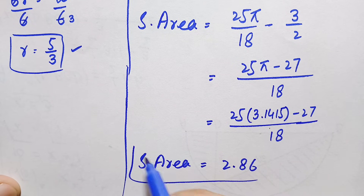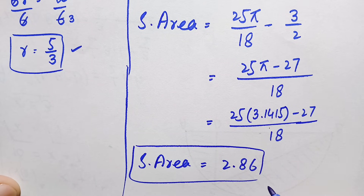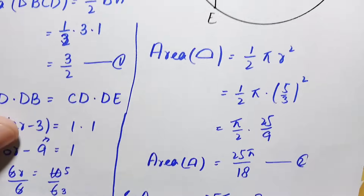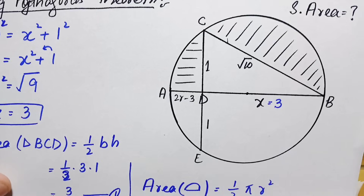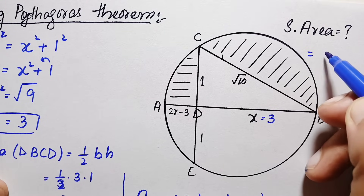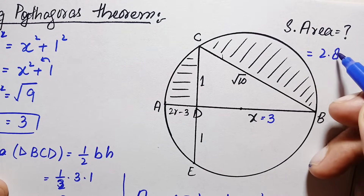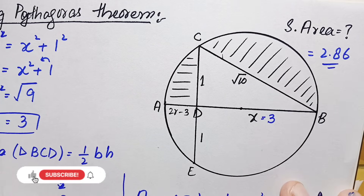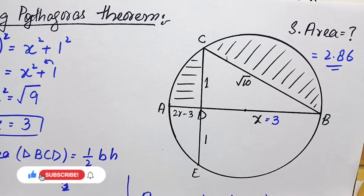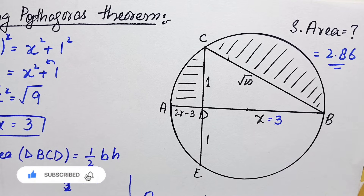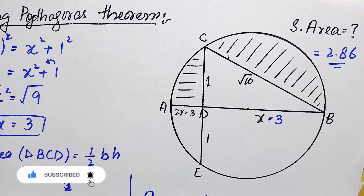Remember that 2.86 square units is not the exact value but an approximate value. So finally, the shaded area of this semicircle is approximately 2.86 square units, which is our final answer. Don't forget to subscribe to my YouTube channel for more interesting step-by-step geometric math problems. Thanks for watching.